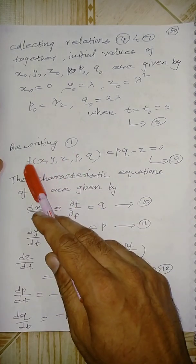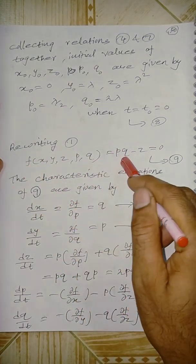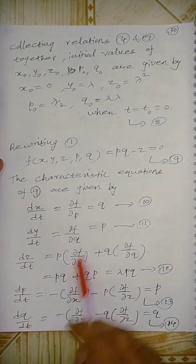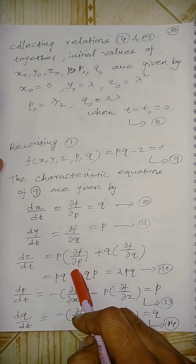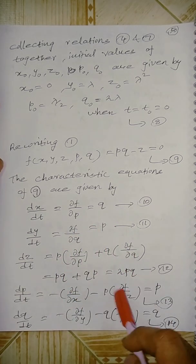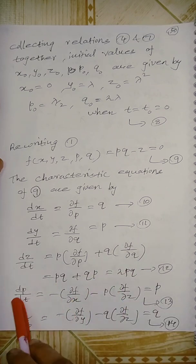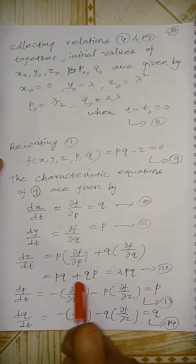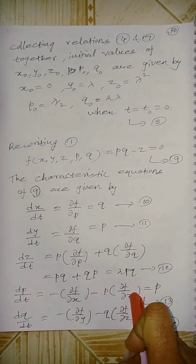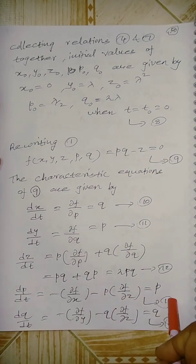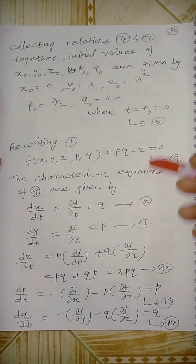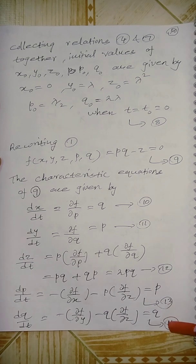Using the character equations: dx/dt = ∂f/∂p = q. So ∂f/∂p gives q and ∂f/∂q gives p. Then dz/dt = 2pq. dp/dt = −∂f/∂x − p·(∂f/∂z): here ∂f/∂x = 0 and ∂f/∂z = −1, so dp/dt = +p. Similarly, dq/dt = +q. These are numbered equations for solving.